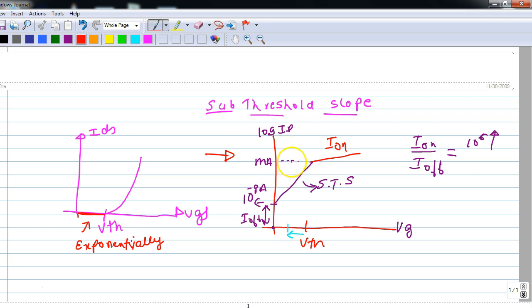We know that the on current is almost the same. But if you see the off current, because of the constant sub-threshold slope, we actually now have a very high off current. Therefore, our Ion by Ioff reduces. So the sub-threshold slope is a very important factor to consider.